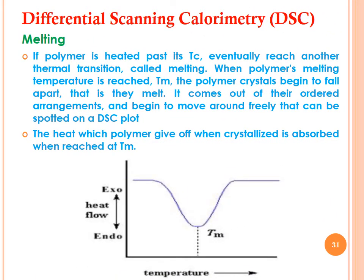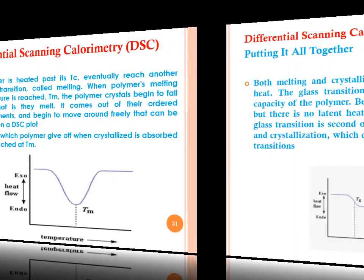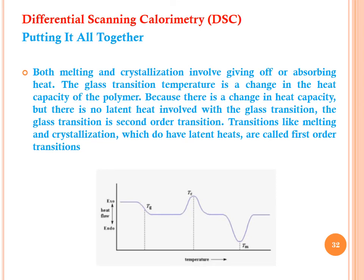After Tc, if the polymer is heated further, it eventually reaches the melting temperature (Tm). When Tm is reached, the polymer crystals fall apart — they melt, coming out of their ordered arrangement and moving freely. The heat the polymer gives off during crystallization is reabsorbed at Tm. Melting is an endothermic process, shown as a minimum in the DSC curve.